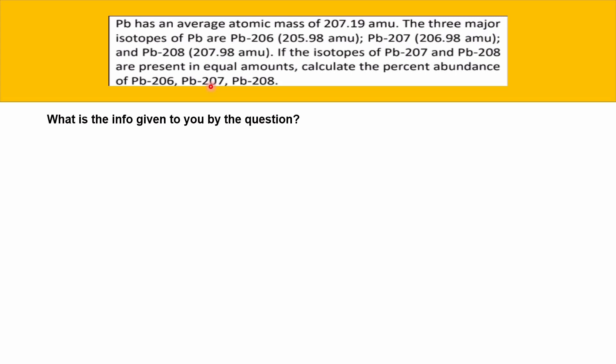So we need to extract the information given by the question — that's the first thing we need to do. The first piece of information is in the first line: the average atomic mass of Plumbum is 207.19 amu.